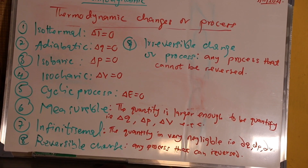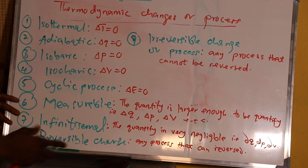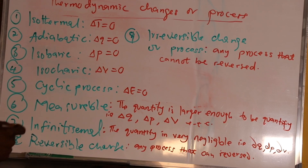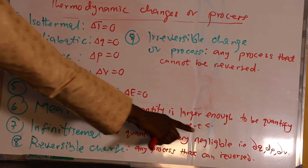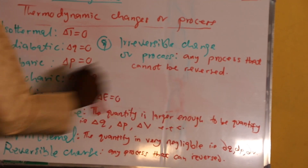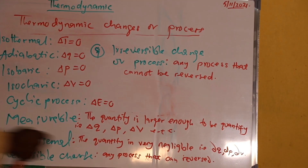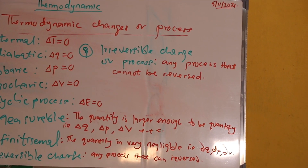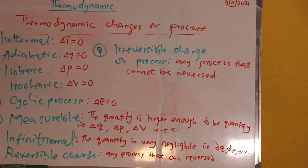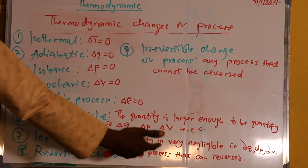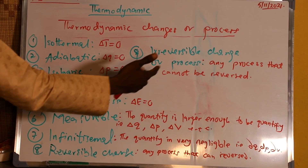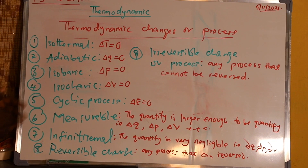Then infinitesimal change: it is any change or process where the quantity is very negligible and we cannot quantify it. That is delta Q, delta P, and delta V. We use the small letter d to represent these infinitesimal changes. Then we have reversible process or changes — any process that can be reversed — and irreversible: any process or changes that cannot be reversed.